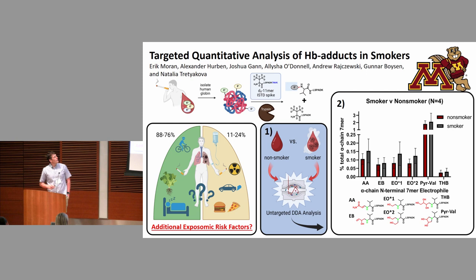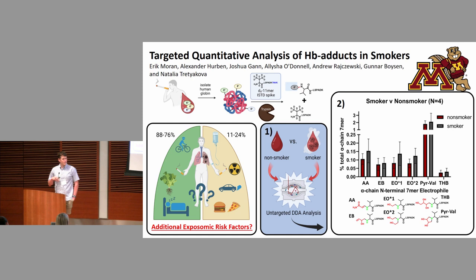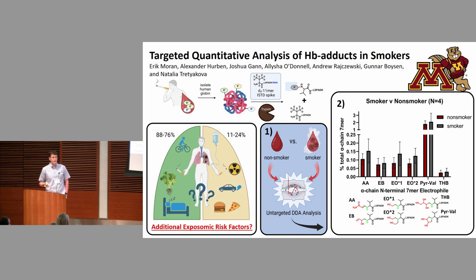The exposome encompasses exposures both externally and internally — your microbiome, your diet, and where you live. To look at this, we measure hemoglobin adducts. Hemoglobin is a great protein to study because it bioaccumulates exposure over time; it's super abundant, easy to obtain, and pretty easy to process. We obtain blood from smokers from a large multi-ethnic cohort, isolate the globin, perform a tryptic digestion, and spike it with a deuterium-labeled synthetic 11-mer internal standard.